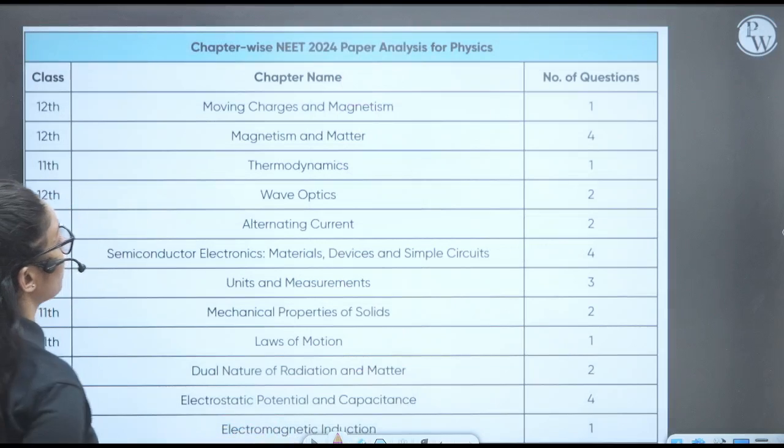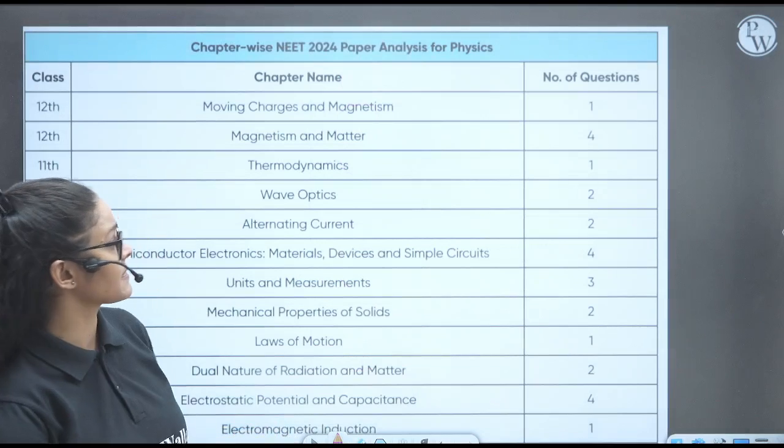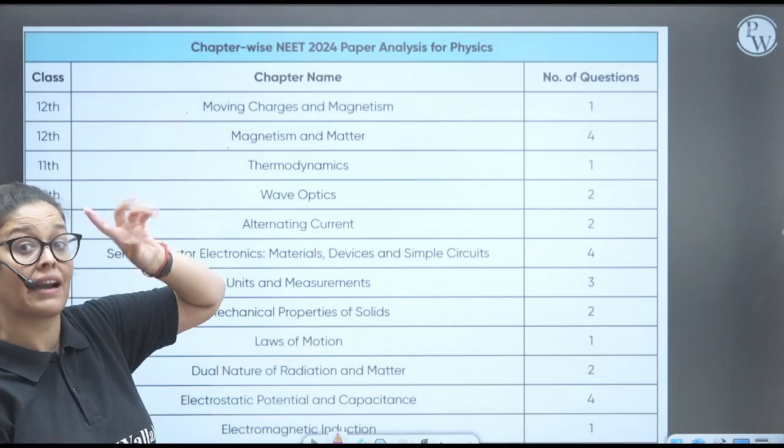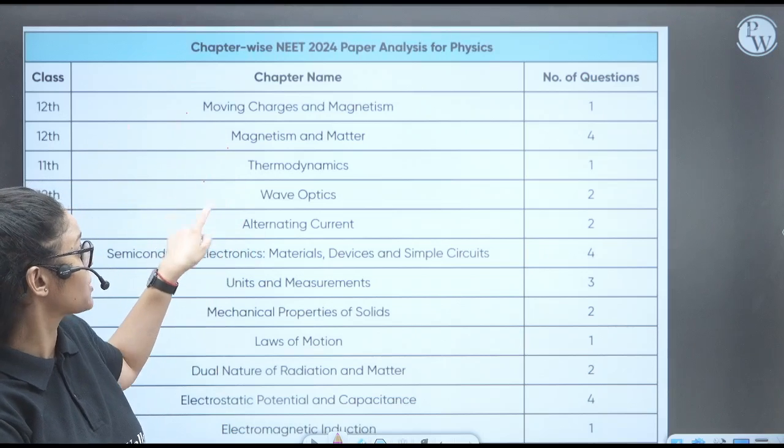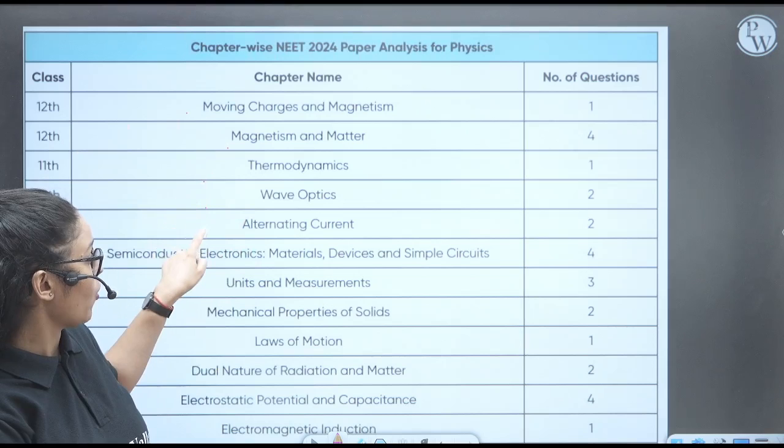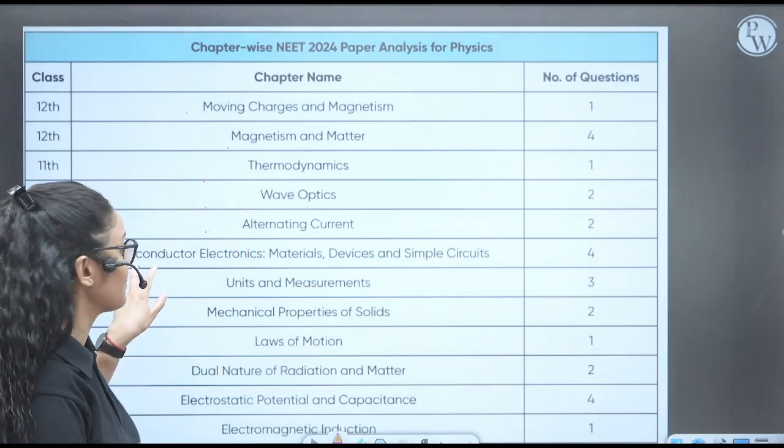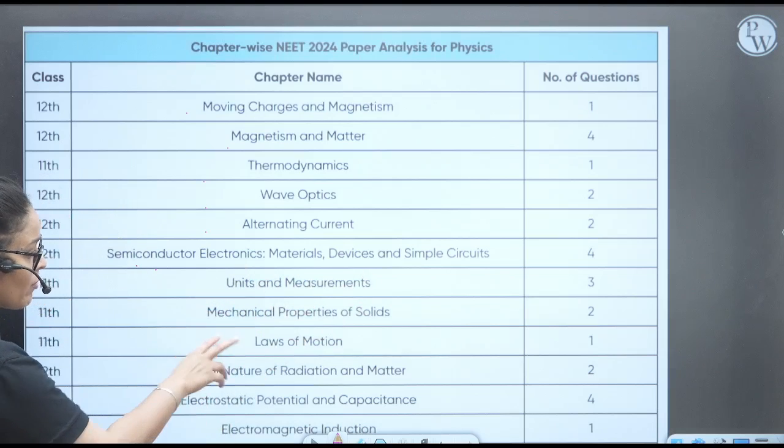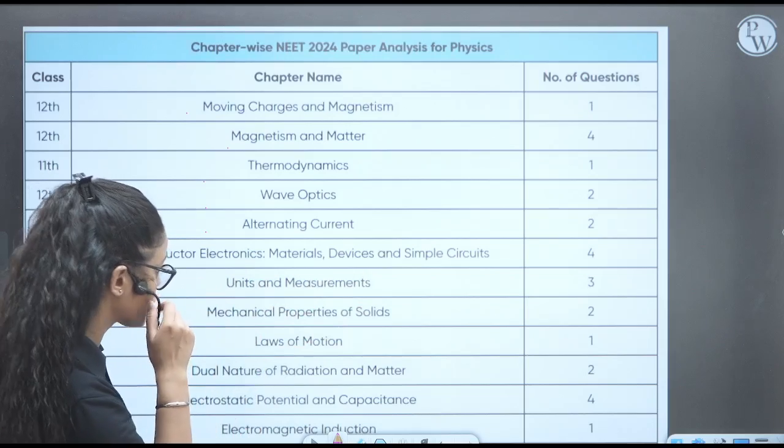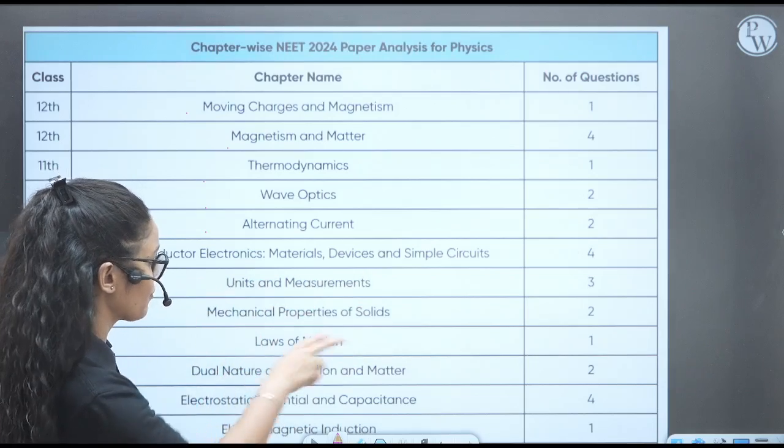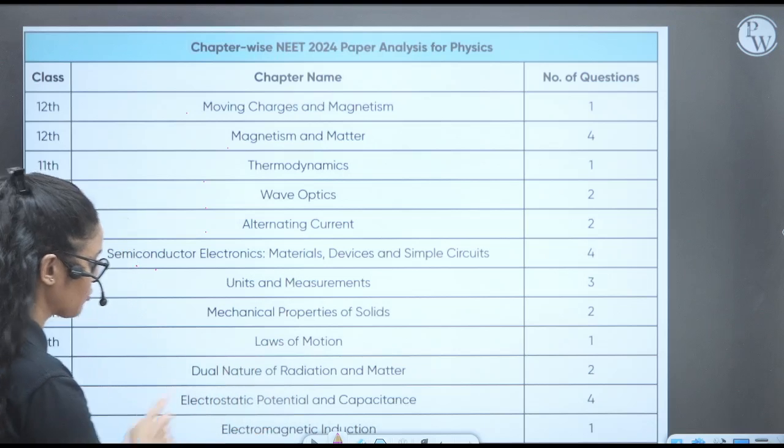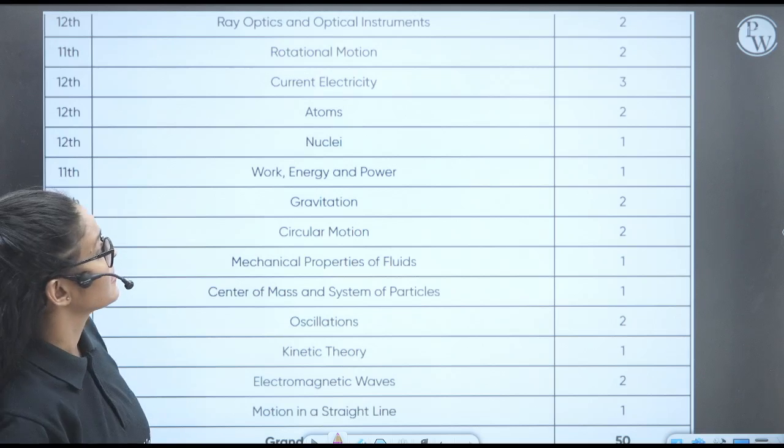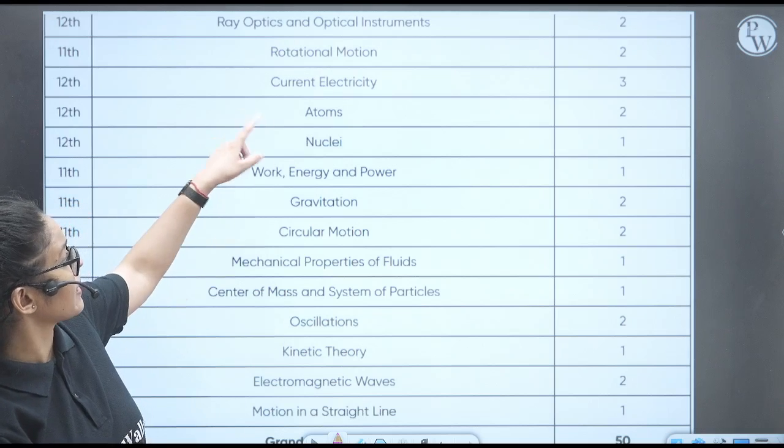Next topic is the analysis of physics chapter-wise. From the moving charges and magnetism, one question. Magnetism and matter, four questions. Thermodynamics, one. Wave optics, one. Alternating AC, two questions. Semiconductor, four questions. Unit and measurement, three. Mechanical property of solids, two questions. Laws of motion, one. Dual nature of radiation and matter, two questions. Electrostatic, four. Electromagnetic induction, one question.